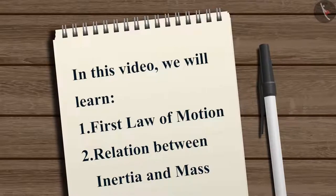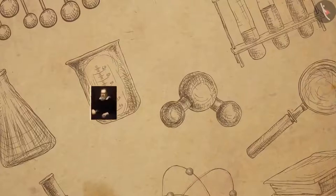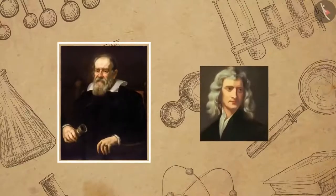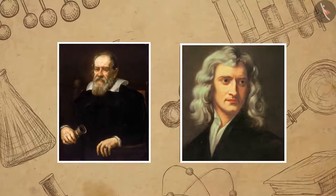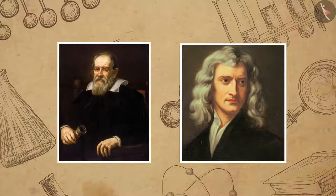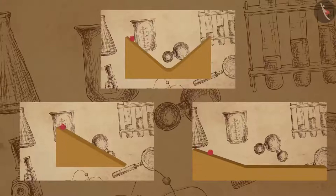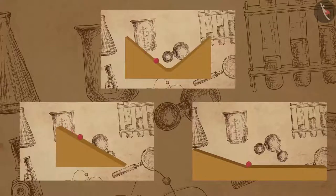Remember we learned in the last video that scientists like Galileo Galilei and Isaac Newton debunked the old ideas of motion and developed a completely new approach to understand it. To understand how the first law of motion came to be, let us first look at the experiments conducted by Galileo.